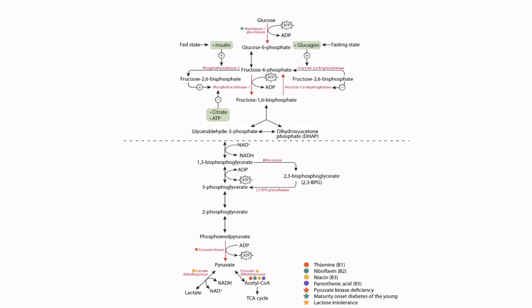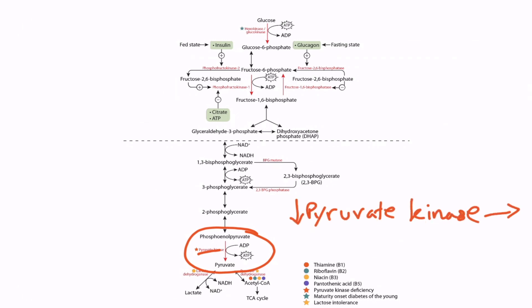One of the last steps in the pathway converts phosphoenolpyruvate into pyruvate by the enzyme pyruvate kinase. This disorder is most pronounced in red blood cells and results in hemolysis. Decreased ATP in red blood cells results in a decreased ability of the cell to pump cations against a concentration gradient, so the cell would not be able to maintain homeostasis, which would result in hemolysis. So if pyruvate kinase activity is decreased, this results in decreased ATP, which results in hemolysis. Next to pyruvate kinase there's a star, which correlates with the disorder pyruvate kinase deficiency.